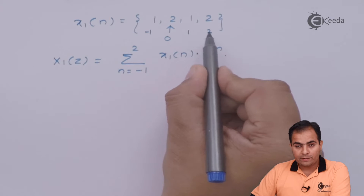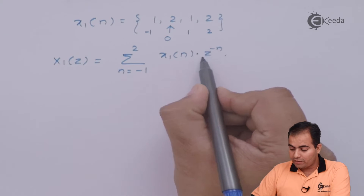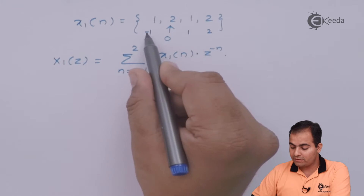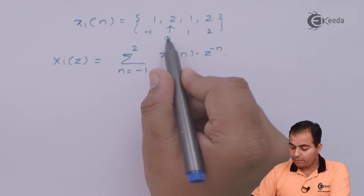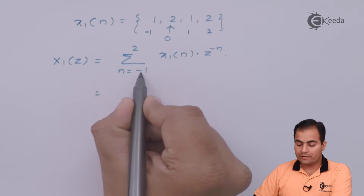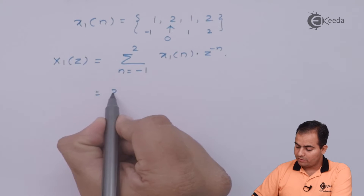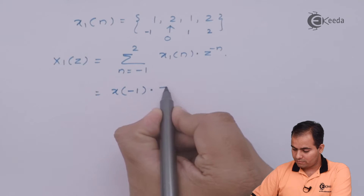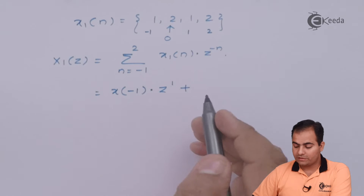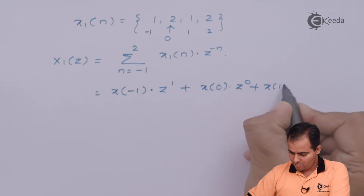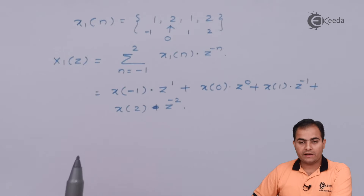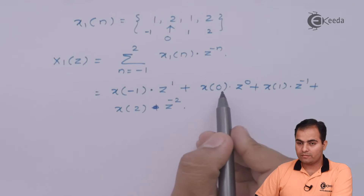Remember: if the instants are positive, the power of Z is always negative; if the instant is negative, the power of Z is always positive. Now substitute the values of n from minus 1 to 2 by breaking the summation. For n = minus 1, the power becomes positive 1. For positive instants, the amplitude power of Z is negative. Substitute the values of X(minus 1) through X(2) accordingly.